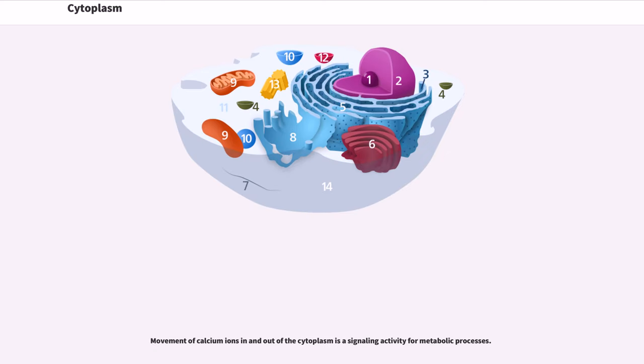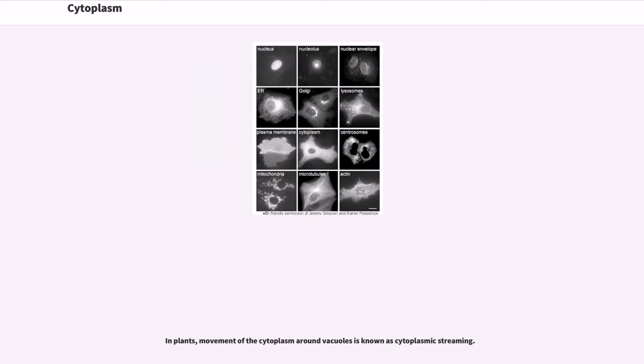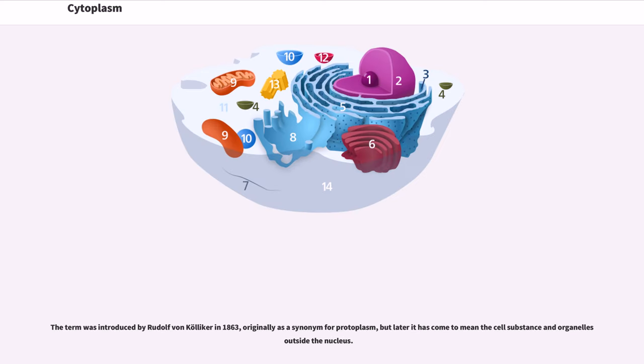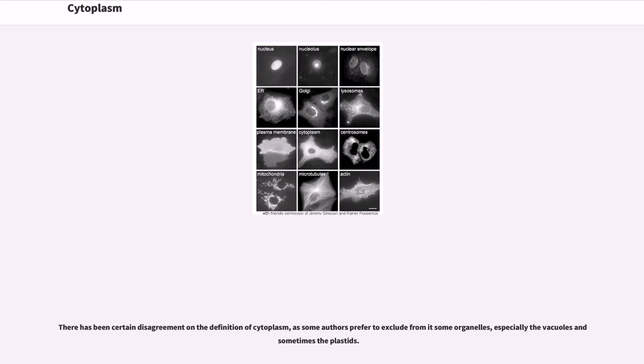Movement of calcium ions in and out of the cytoplasm is a signaling activity for metabolic processes. In plants, movement of the cytoplasm around vacuoles is known as cytoplasmic streaming. The term was introduced by Rudolf von Kölliker in 1863, originally as a synonym for protoplasm, but later it has come to mean the cell substance and organelles outside the nucleus.